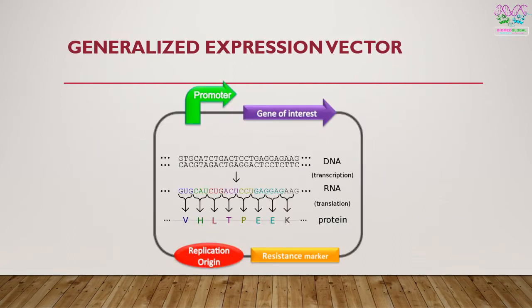Here is a simplistic diagram showing how DNA in a vector is transcribed to RNA, followed by the formation of protein. The formation of RNA from DNA is known as transcription, and the formation of protein from RNA is called translation.